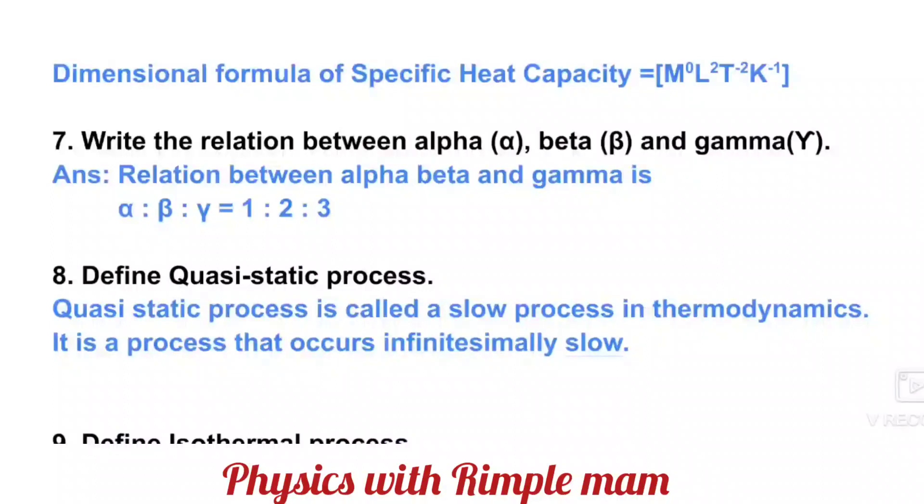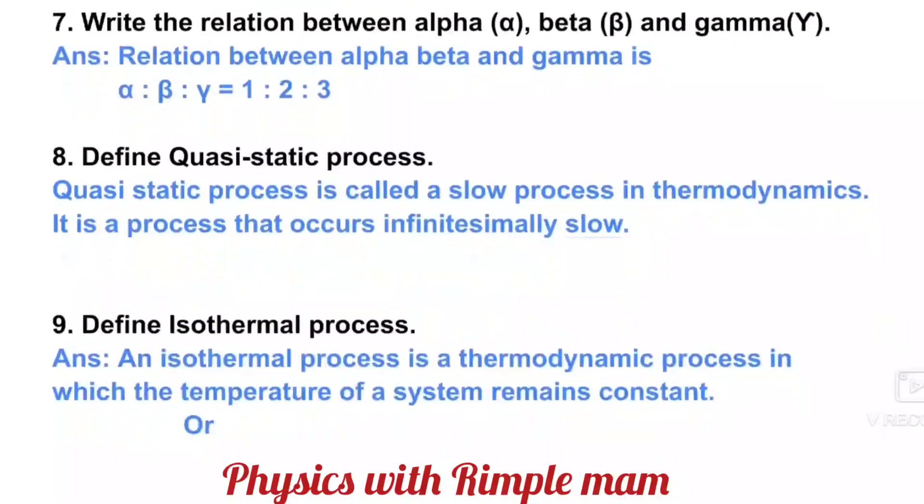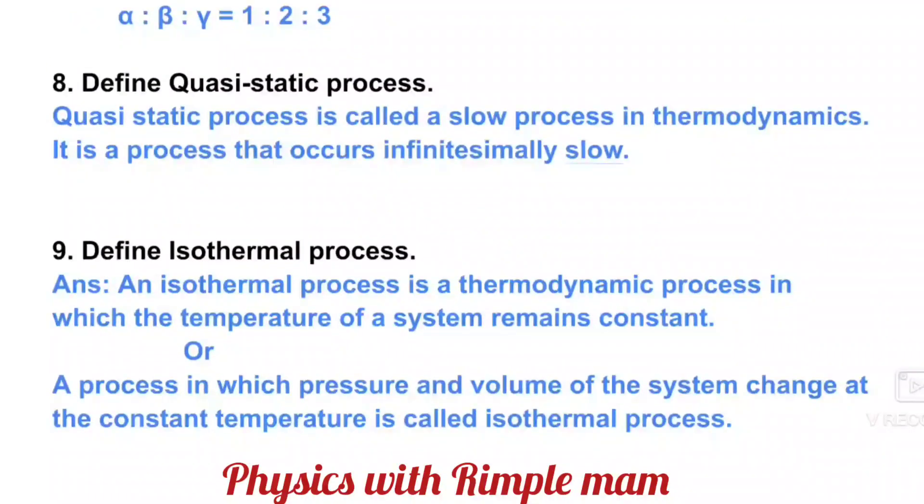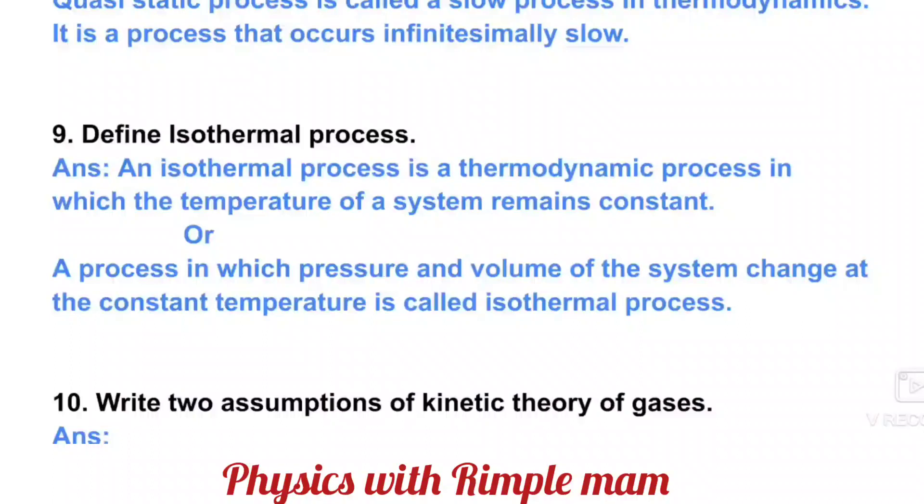When we discussed Cp and Cv, it was explained in detail that you should prepare these definitions very well as they are most important. Sample papers 1, 2, and 3 all have these definitions, so learn the definitions, units, and dimensional formulas very well. Next: Write the relationship between alpha, beta, and gamma - that is 1:2:3. Next is a simple definition: quasi-static process.